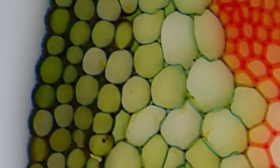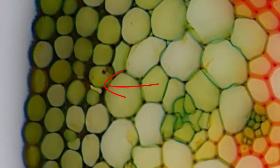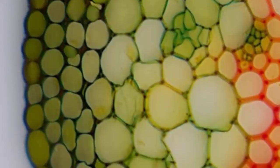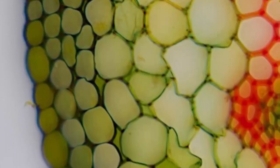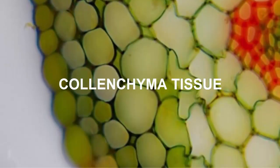When cells start to grow an additional cell wall layer, they become more rigid and can start support functions. Near the edge of plant organs, there are cells that have unevenly thickened walls — with thickenings usually at the corners. These cells comprise the colenchyma tissue.